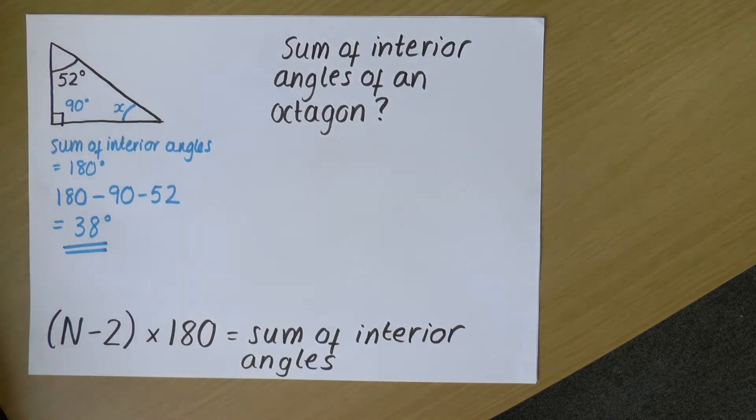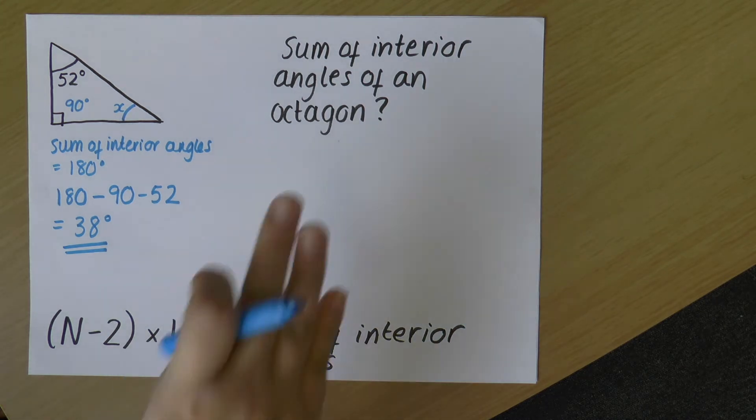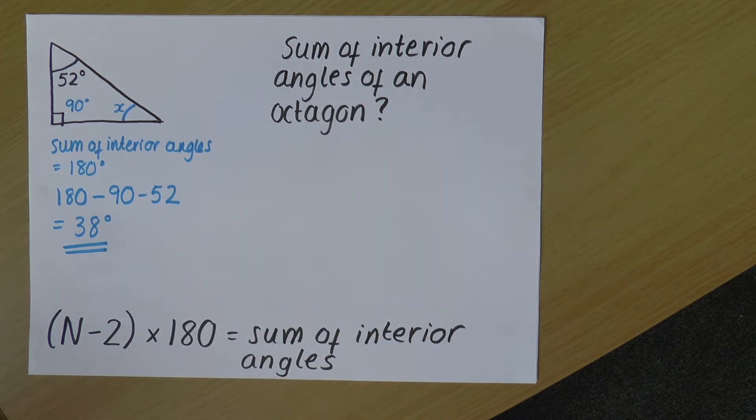Okay. Let's have a look at this other question on the right. So this is asking for the sum of the interior angles of an octagon.